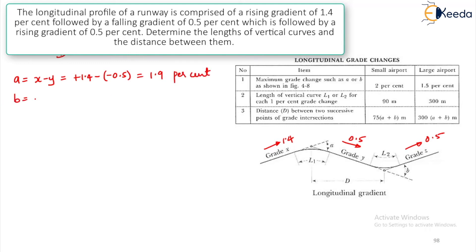Then calculate your B which is Y minus Z. This is falling, so minus 0.5 minus of because it is raising plus 0.5. How much will you get? 1.0%. Don't worry about the sign. The sign is not of much importance. Once you calculate A and B decide on which airport category it will come. A is greater than 1.5% and B is less than 1.5%. Even if A or B is greater than 1.5 then it will go to small airports. This is a small airport. Why? Because your A is greater than 1.5%, it is coming under the small airport category.